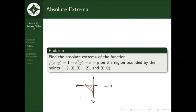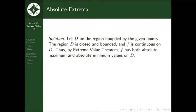The region has three boundaries: the x-axis (or part of it), part of the y-axis, and this diagonal line. Now that we understand what our region looks like, let's go into the solution, starting with the extreme value theorem. The EVT is very important because without it, we could not guarantee the existence of our absolute extrema.